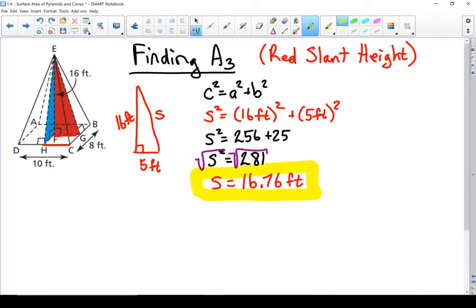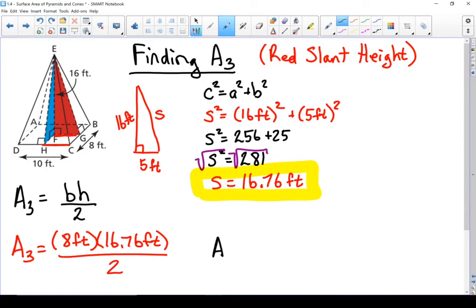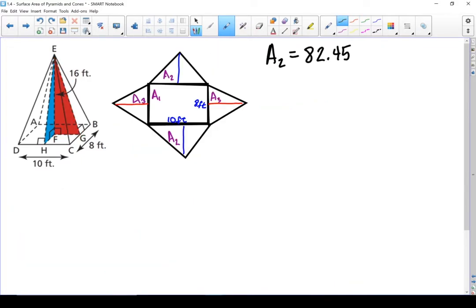Okay, so it's not that different than our previous slant height, but it is different enough that it throws our calculations off. Let's use that to find the area of our triangle. And there is the area of our other pair of sides.